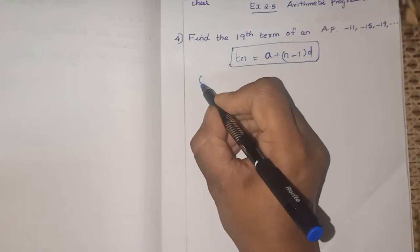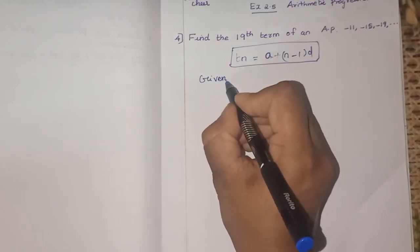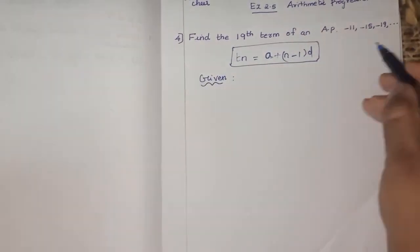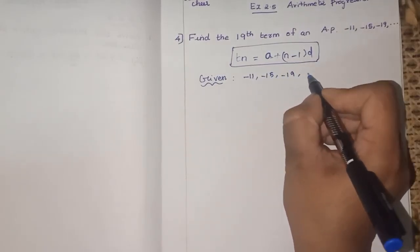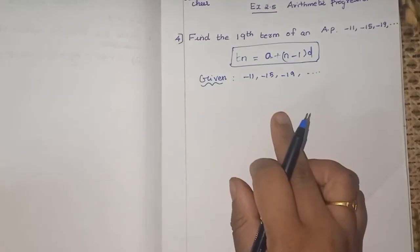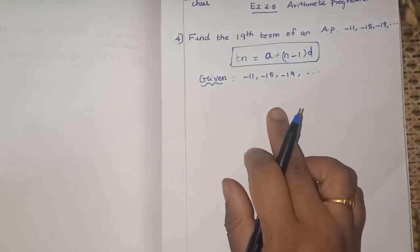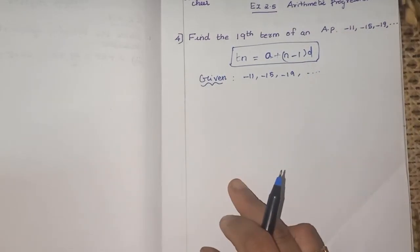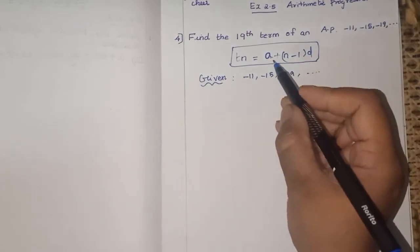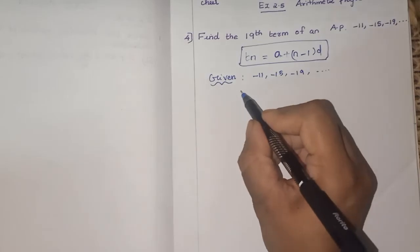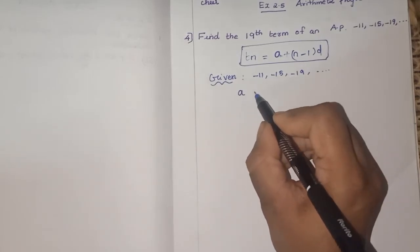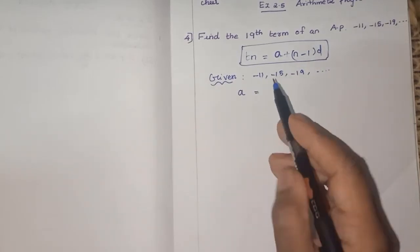So what is A? Given sequence, we can write the given sequence. What is it? Minus 11, minus 15, minus 19. It goes on. Only 3 terms given. It is an AP, it is already given it is an AP. So we need A and D. What is A? A means it is the first term of an AP. So what is the first term here? Minus 11.